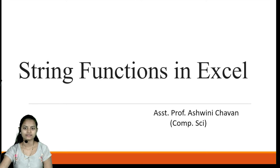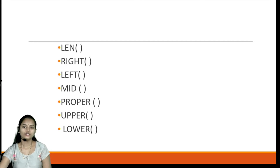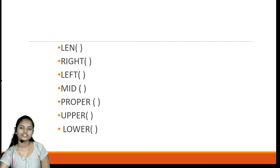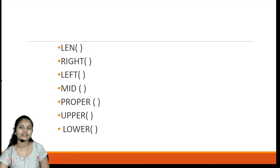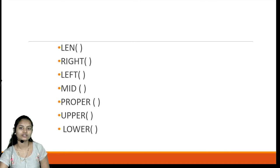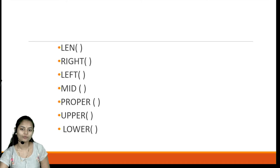In Excel, we can use various functions that are applied on strings, that is, on characters. These functions include LEN, which finds the length of a string; LEFT and RIGHT, which read characters from the left or right; MID, which reads middle characters; PROPER, which converts a string to proper case; and UPPER and LOWER, which change the case of a string.